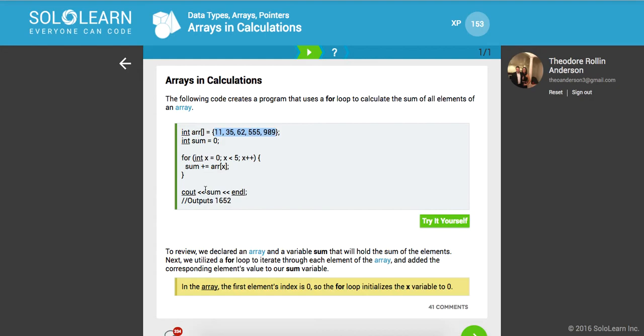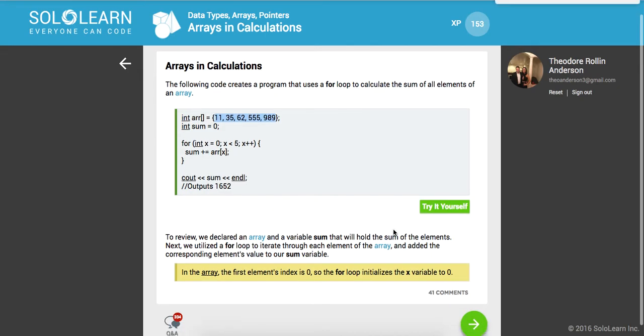In the array, the first element's index is 0. So the for loop initializes the x variable to 0. Cool.